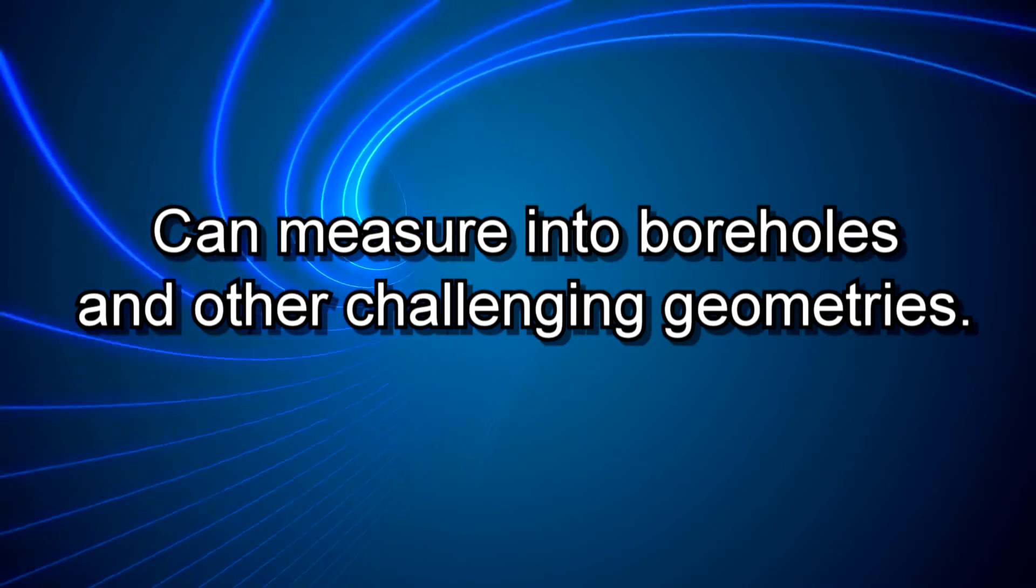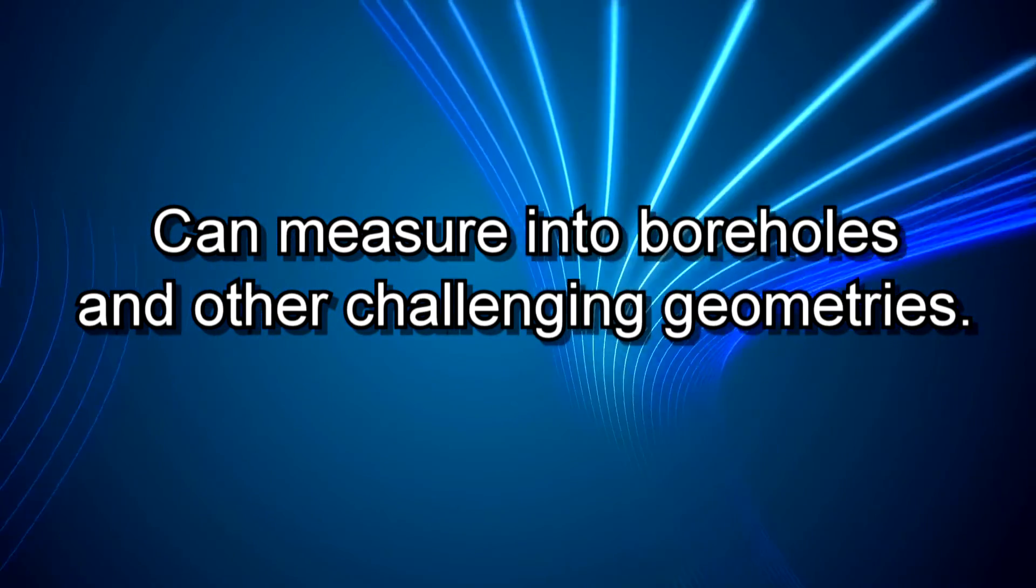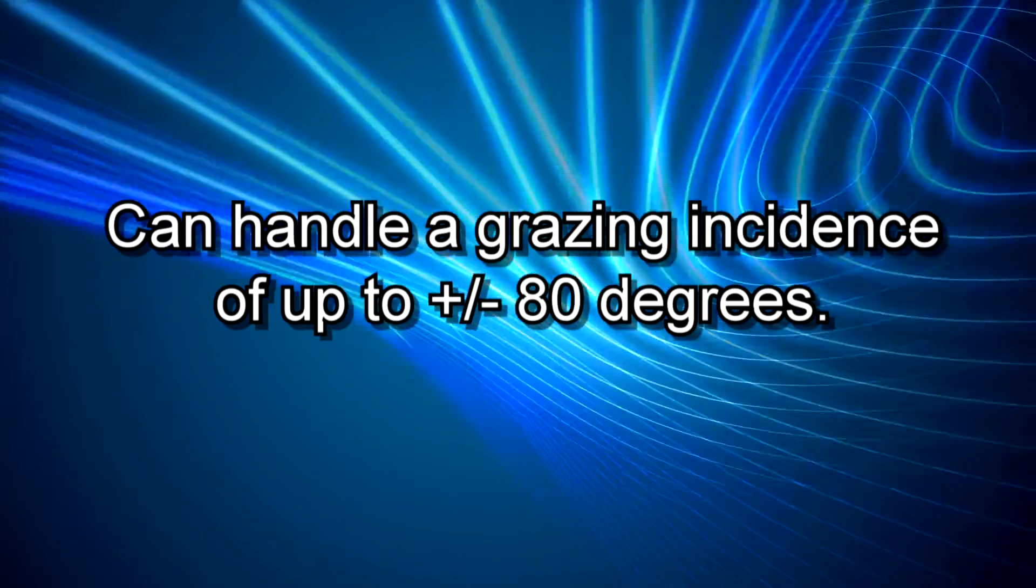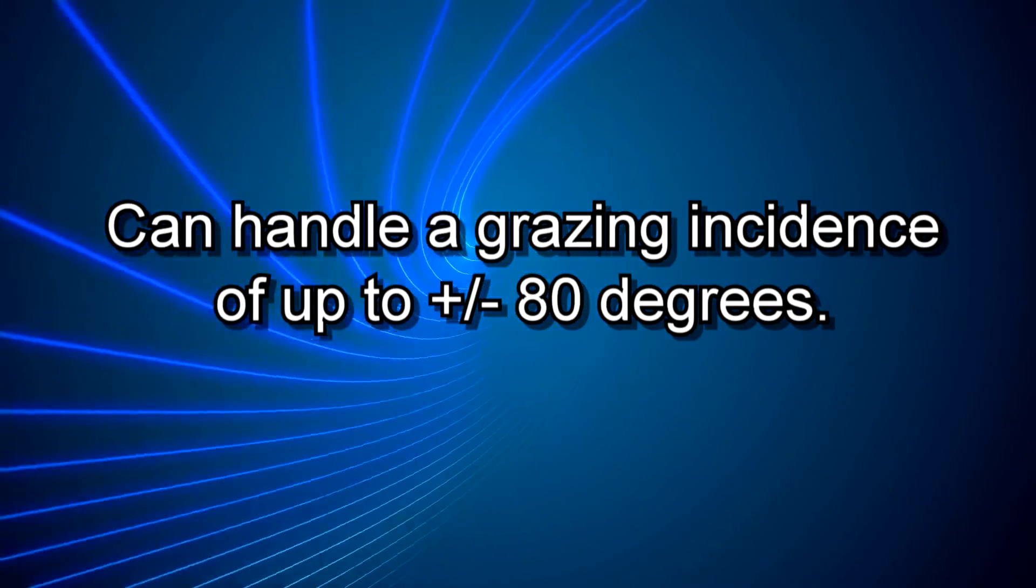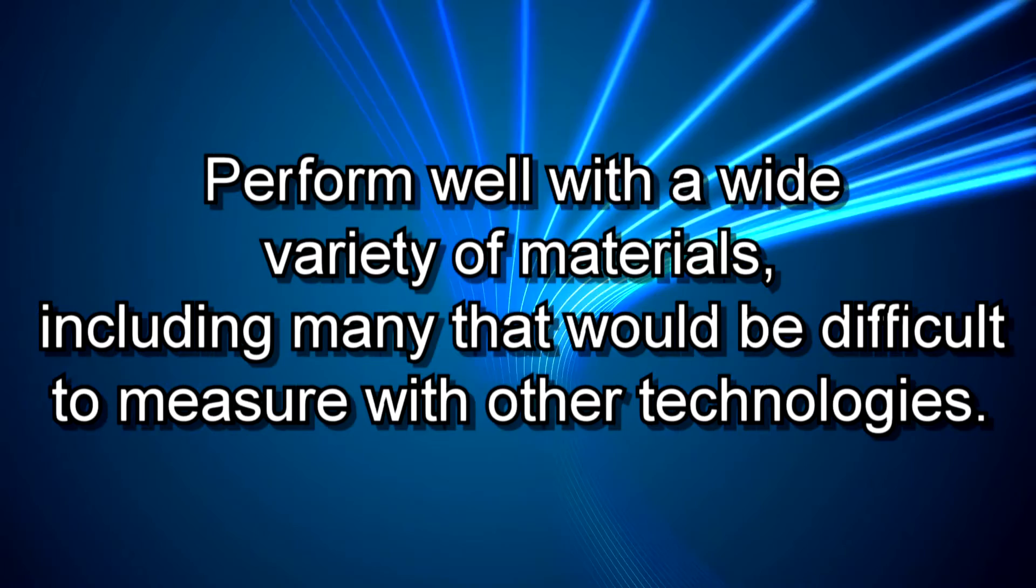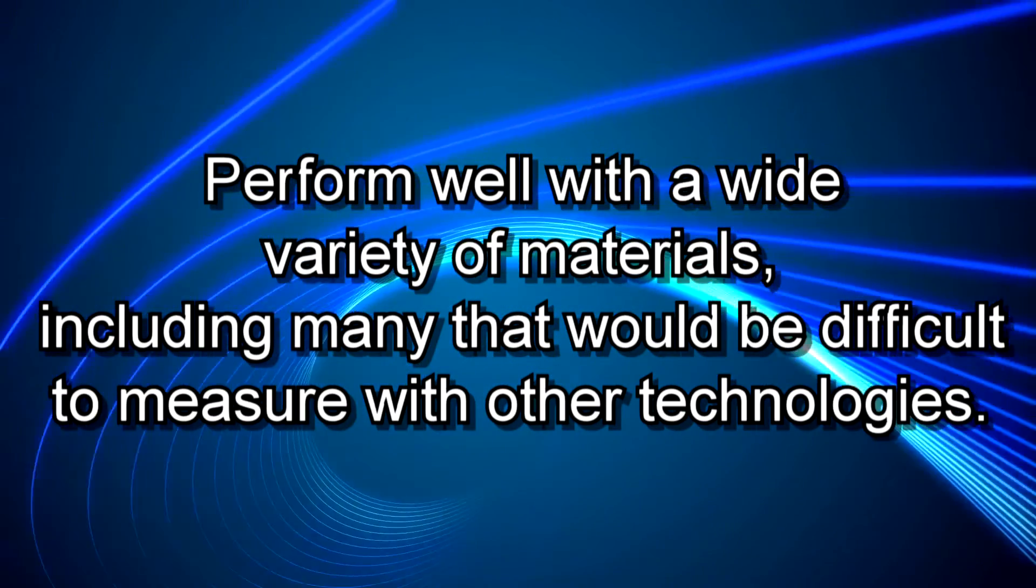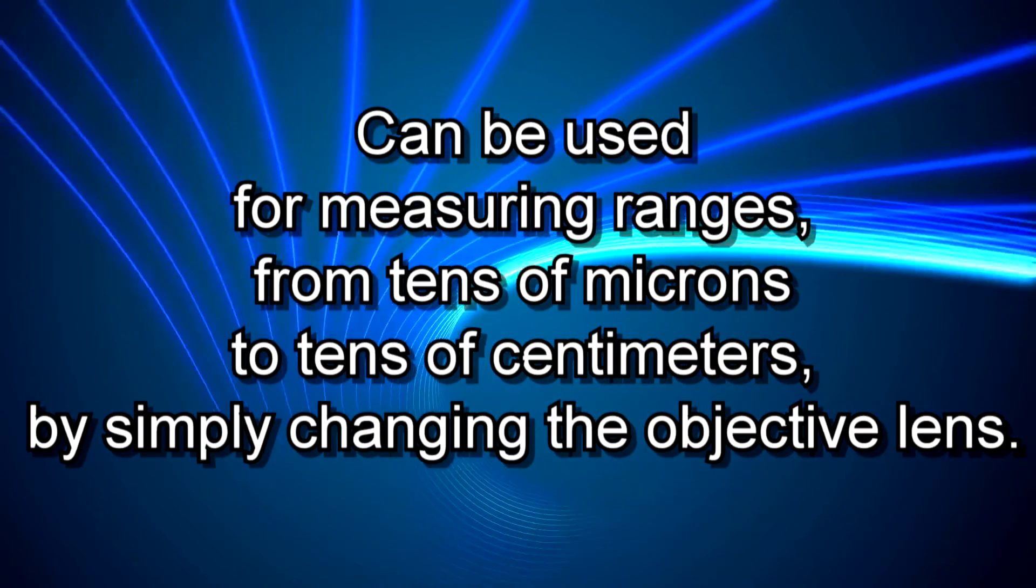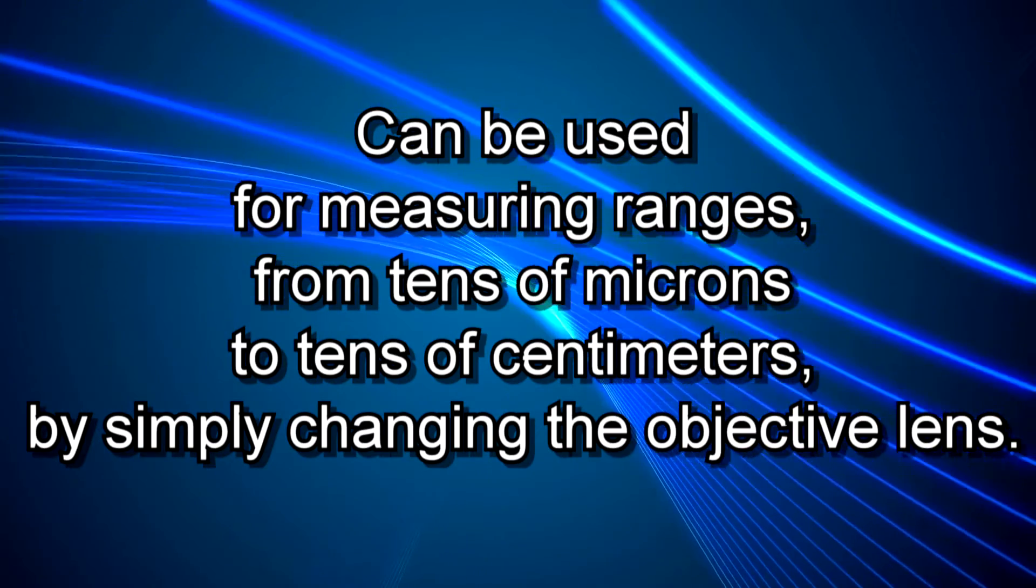OptiMet sensors can measure into boreholes and other challenging geometries, can handle a grazing incidence of up to plus minus 80 degrees, perform well with a wide variety of materials including many that would be difficult to measure with other technologies, and can be used for measuring ranges from tens of microns to tens of centimeters by simply changing the objective lens.